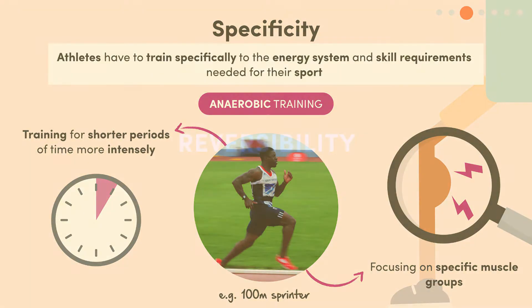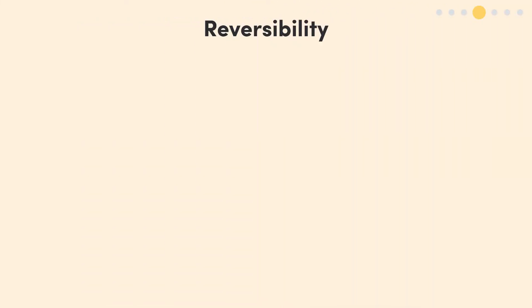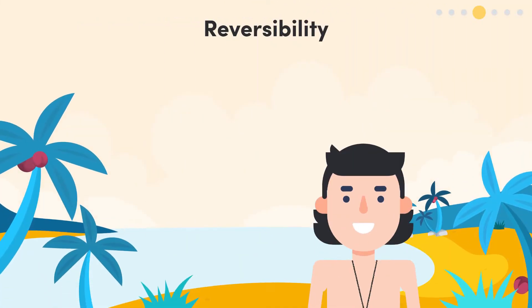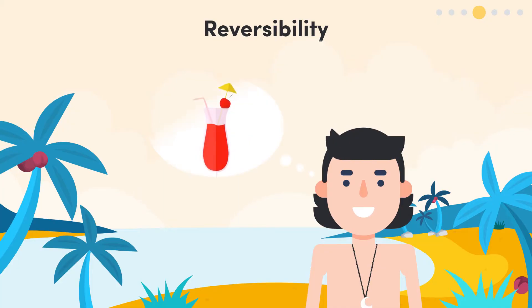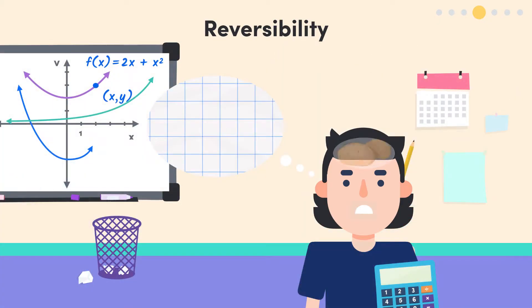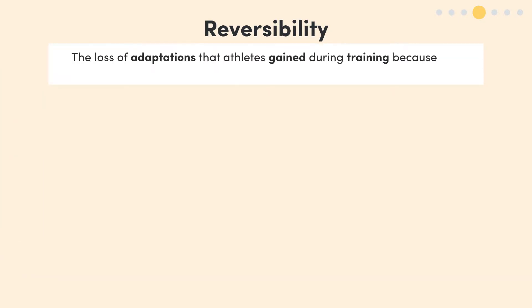Our next principle of training is reversibility. It's what happens when you go on holidays from school and come back and your brain feels like mush and 2 plus 2 starts equalling 5. For athletes, it's the loss of adaptations they gained during training because of a prolonged break period. Basically: use it or lose it.